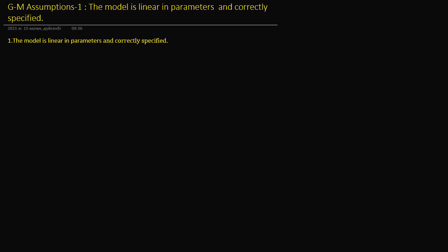Hi everybody, in this video we are going to talk about the Gauss-Markov assumptions: the model is linear in parameters and correctly specified. I will start off with some intuition, then provide some examples. Let's go.